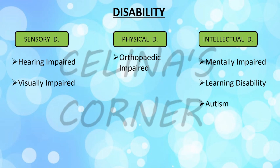We have studied a lot about disability and all the kinds, so it gets a little confusing because there is too much information. I thought putting it in a tabular format would make it easy to understand and remember. We are going to study three types of disability: sensory disability, physical disability, and intellectual disability. Sensory disability is any kind of disability in your five senses, with hearing impairment and visual impairment mentioned in your notes. Physical disability covers orthopedic impairment. Intellectual disability includes mentally impaired, learning disability, and autism.